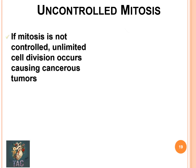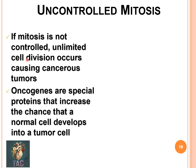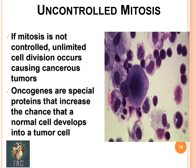Uncontrolled mitosis causes unlimited cell divisions, resulting in cancer cells. You can see a large number of cells that vary in shape from one another, having a larger nucleo-to-cytoplasmic ratio — these are the cancerous cells. Oncogenes are special proteins that increase the chances that a normal cell develops into a tumor cell.